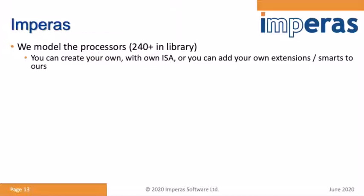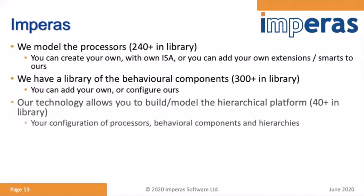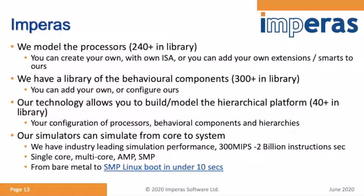At Empirous we develop over 240 processor models covering all mainstream architectures, plus a library of behavioral peripheral components to build subsystems hierarchically. Our simulators scale from cores to systems, managing 300 MIPS to 2 billion instructions per second, and support bare-metal, multi-core, AMP, and SMP. An example I'll give later is a quad-core system booting Linux in under 10 seconds.